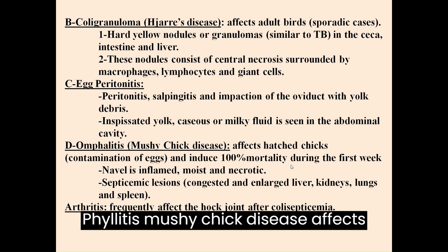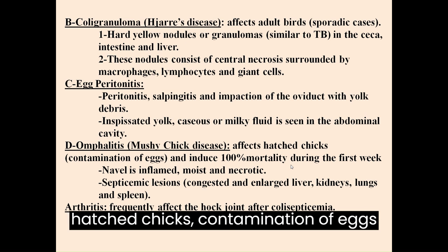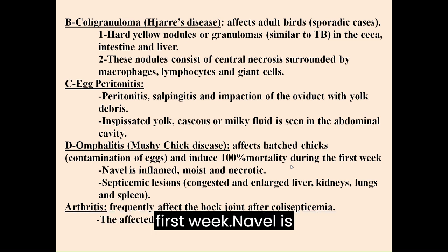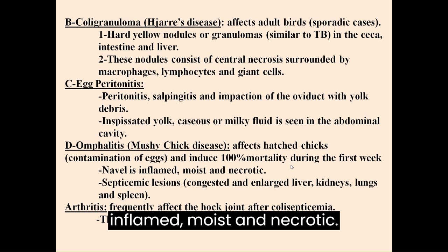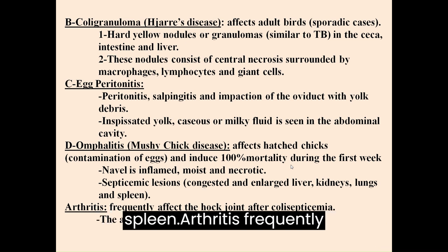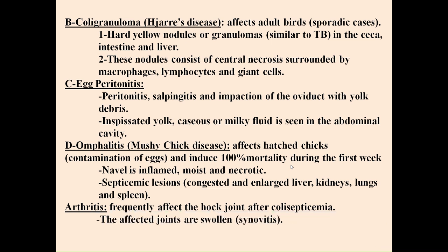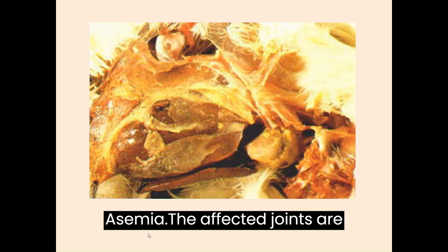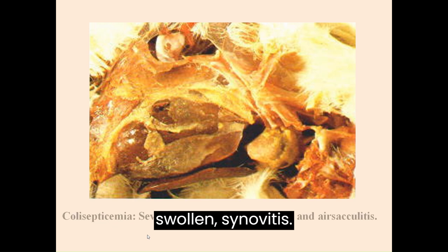D. Omphalitis (mushy chick disease) affects hatched chicks; contamination of eggs can induce 100% mortality during the first week. The navel is inflamed, moist and necrotic. 1. Septicemic lesions: congested and enlarged liver, kidneys, lungs and spleen. 2. Arthritis frequently affects the hock joint after colosepticemia. 3. The affected joints are swollen, with synovitis.